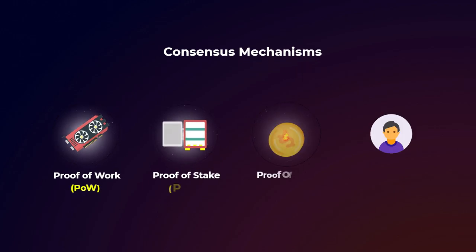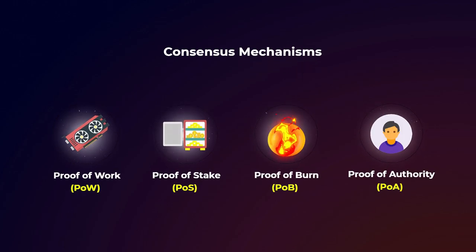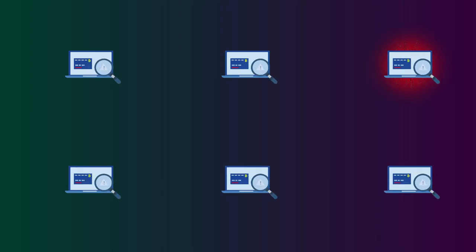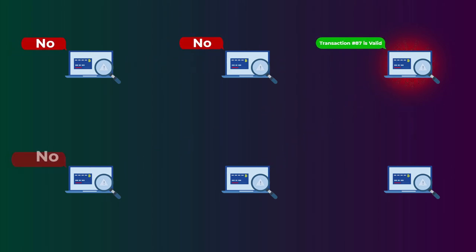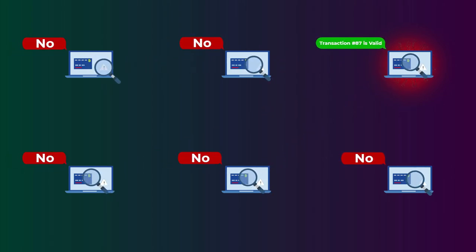To reach this agreement, something called a consensus mechanism is used, and there are a lot of consensus mechanisms like proof of work and proof of stake. But the problem here is that these computers all around the world act like the generals in our story. So there are some malicious computers trying to prevent the other computers from reaching agreement. These malicious computers are equivalent to the traitors in our story.